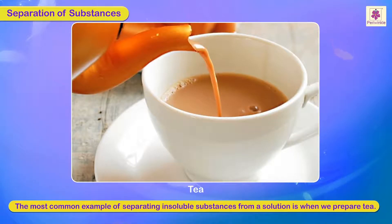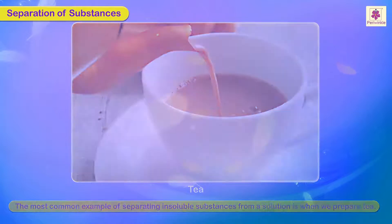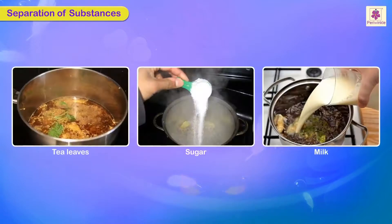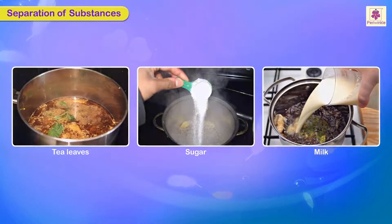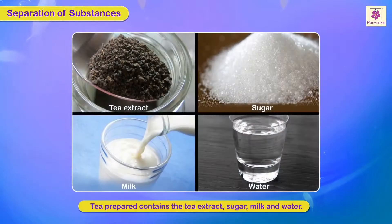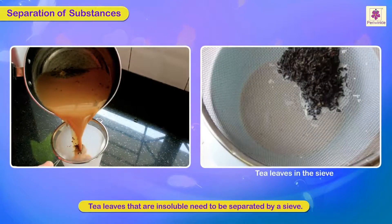To prepare tea, we boil the tea leaves in water and then add sugar and milk. The tea prepared contains the tea extract, sugar, milk, and water. However, the tea leaves, which are insoluble, first need to be separated by a sieve before we can get a cup of tea.